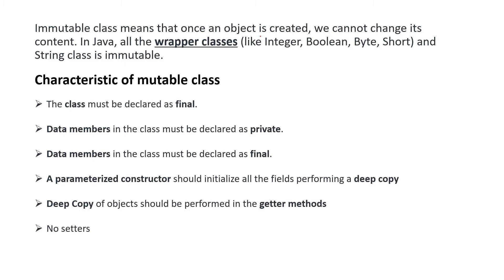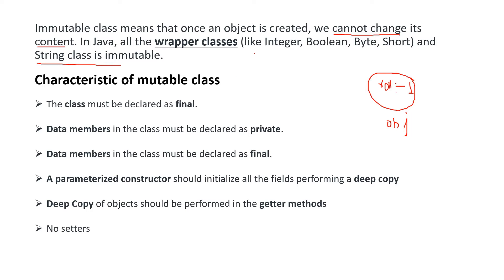Immutable classes mean that once an object is created we cannot change its content. Suppose you have a user class and you create an object of that class with a field called roll number. Once you set this value to, say, one, we cannot change it from one to two — that represents an immutable class. In Java, all wrapper classes like Integer, Boolean, Byte, Short, and the String class are immutable. These are the default immutable class examples you can mention in any interview.